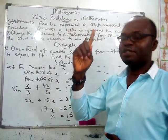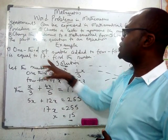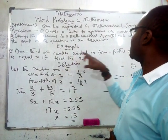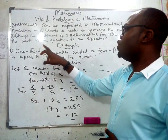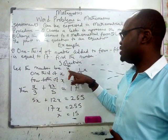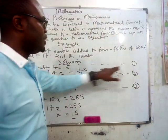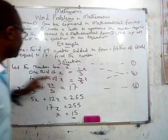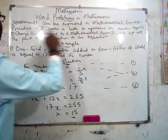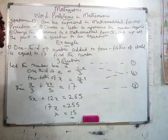We are choosing a letter to represent the number — the number whose one third is added to four fifths to give the solution. We represent that number as x. So that is procedure one: let the number be x. Then procedure two is to change the statement to mathematical form.